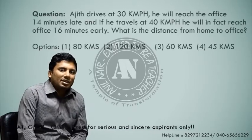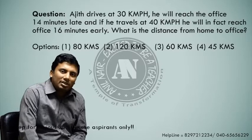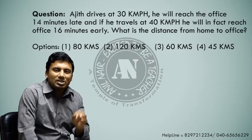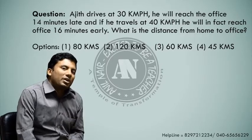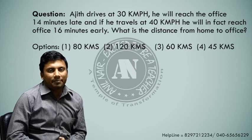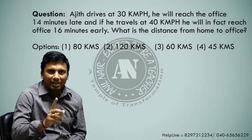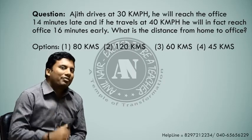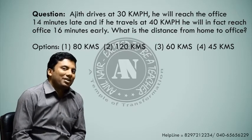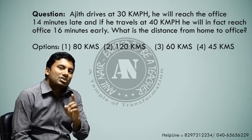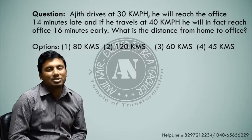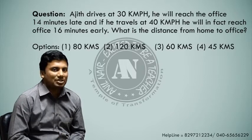Question: There is a person by name Ajit. He drives from home to office at a speed of 30 kmph and reaches office 14 minutes late. Next day, he drives from home to office at a speed of 40 kmph and reaches office 16 minutes early. We have to find the distance from home to office.